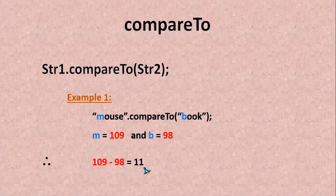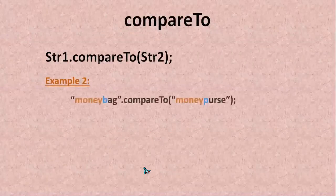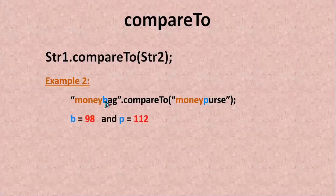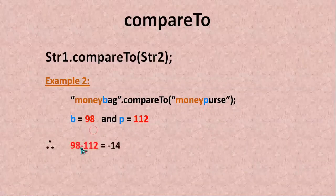The next example here I have money bag and then money purse. As per the dictionary money until that both are same. b here it starts a different letter. Here it is p is different letter. It is going to consider the ASCII value of b minus ASCII value of p. Here b has 98 as its value, p has 112 as its value. 98 minus 112 is minus 14.